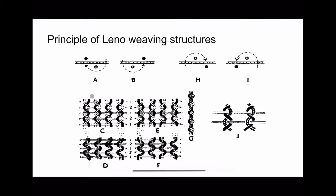The crossing yarn may be required to form the shed either on one or the other side of the standard yarn — either the crossing end forms the shed on the left side or on the right side of the standard yarn. In order to achieve this, each crossing end must be controlled by two heals, the males of which are placed one on either side of the corresponding standard end.